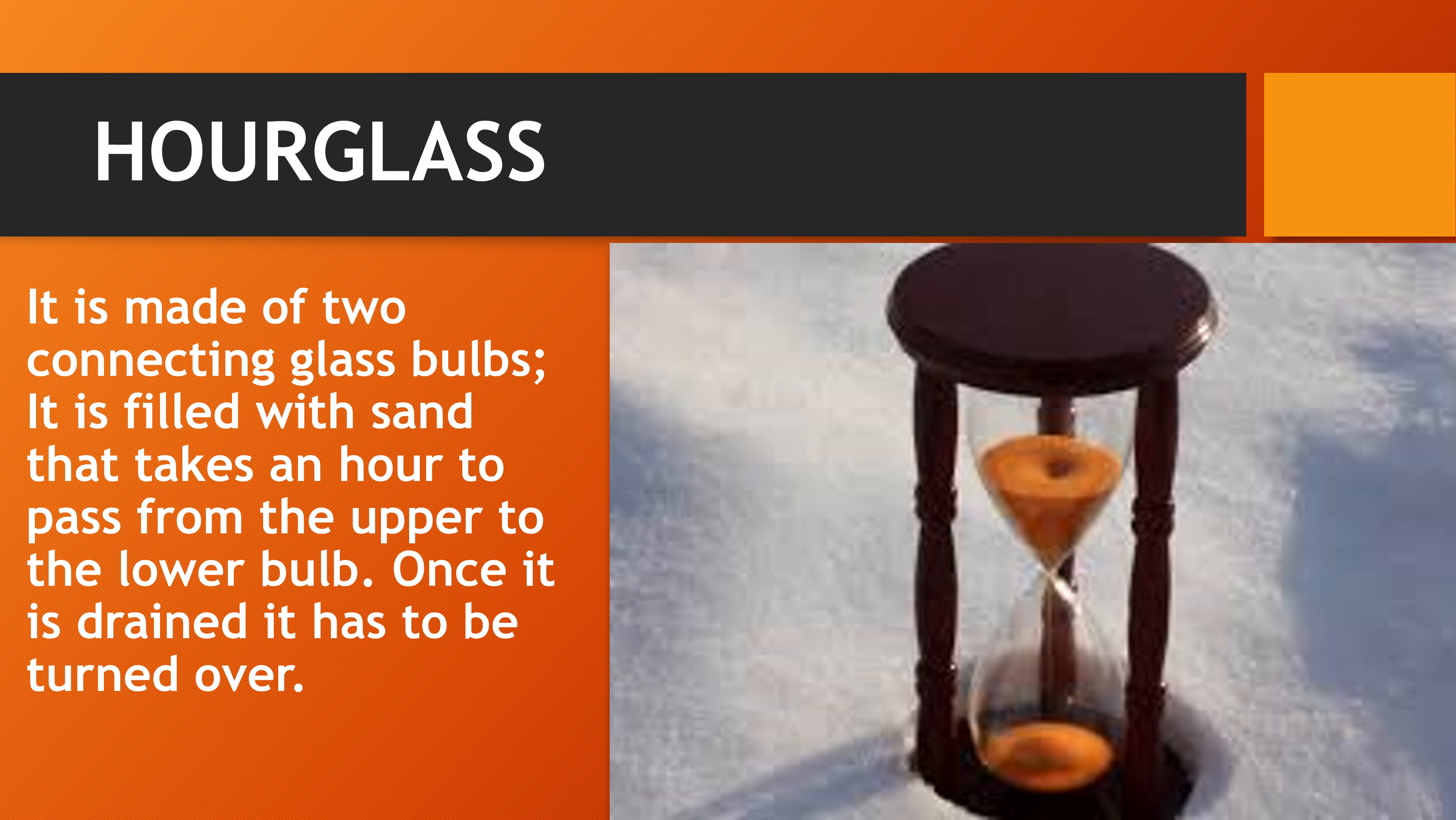Next type of ancient clock is hourglass. It is made of two connecting glass bulbs. It is filled with sand that takes an hour to pass from the upper to the lower bulb. Once it is drained, it has to be turned over. When this process is complete, one hour is complete.